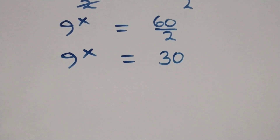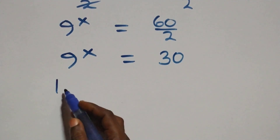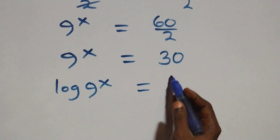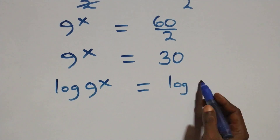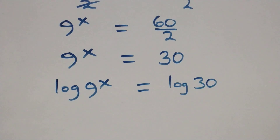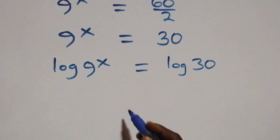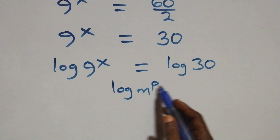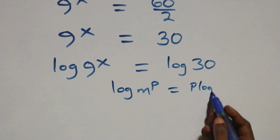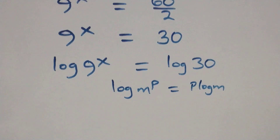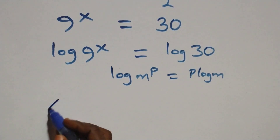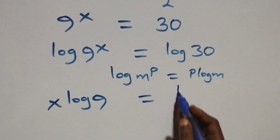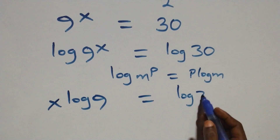Then we take the log on both sides: log of 9 raised to power x equals log 30. Next, we apply the power rule of logarithm — when we have log m raised to power p, this is the same as p times log m. So we have x log 9 equals log 30.